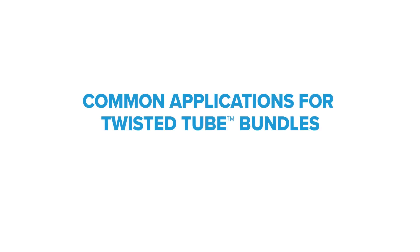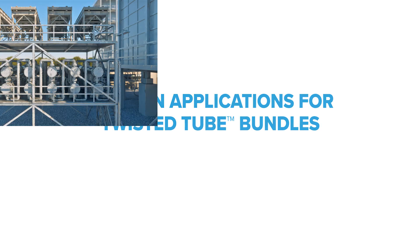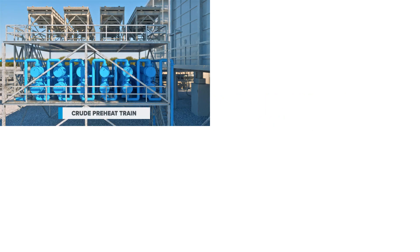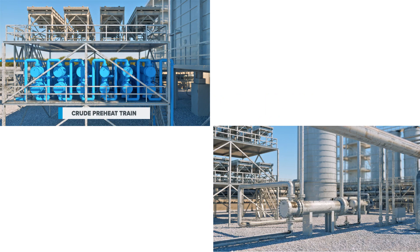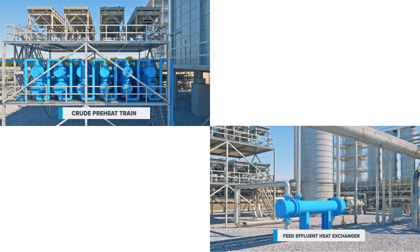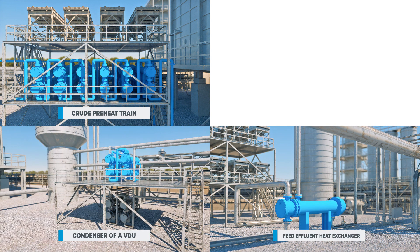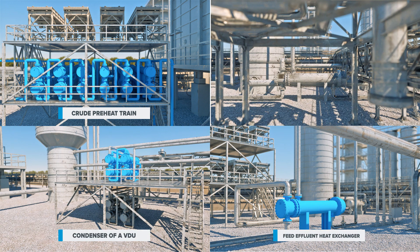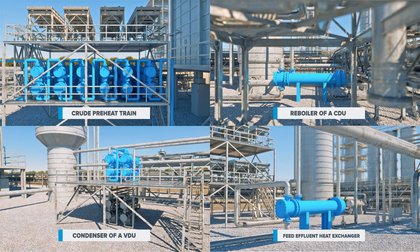Common applications for twisted tube bundles where our customers are reaping these benefits include crude oil preheat trains, feed effluent heat exchangers, overhead condensers, and reboilers in crude distillation, reforming, and hydro-treating units.